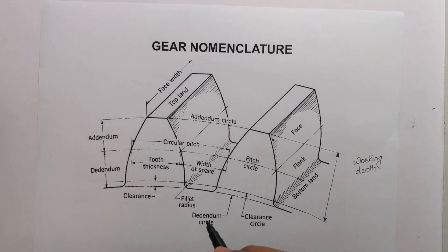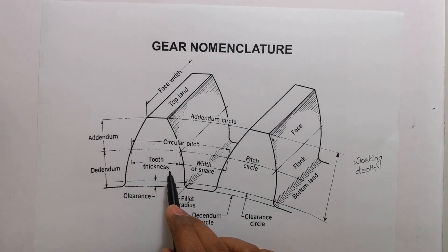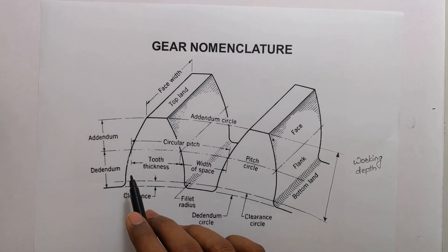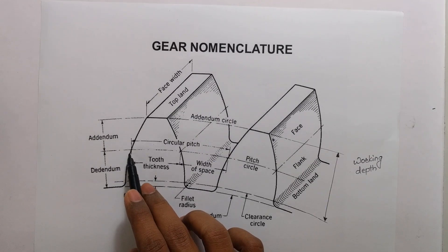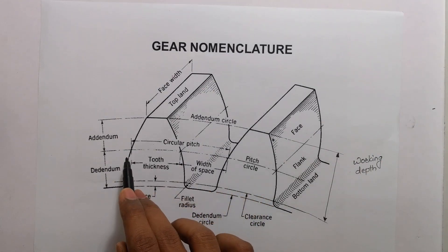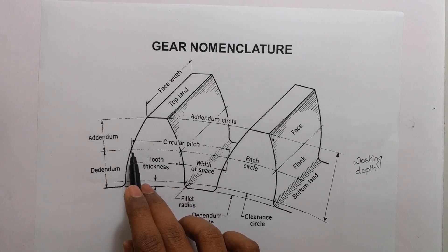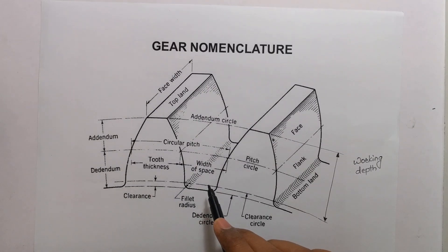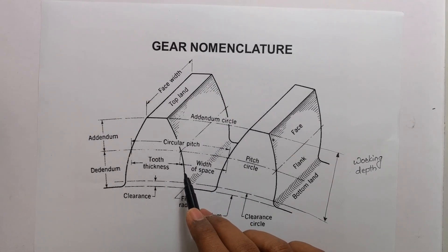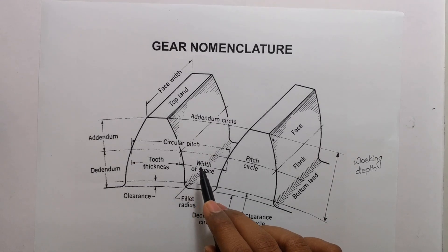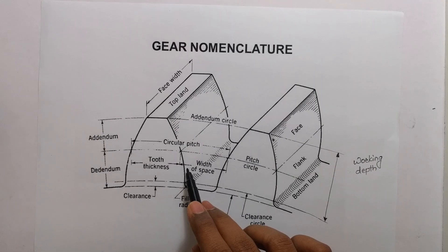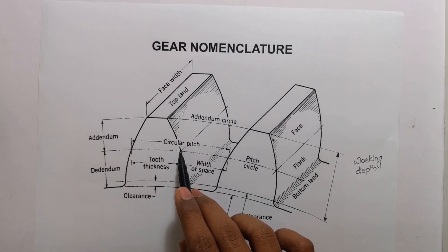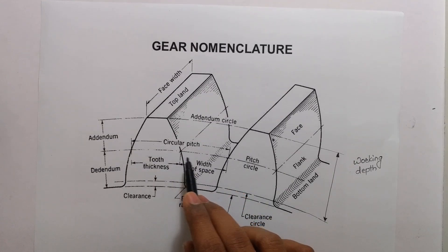Tooth thickness is the width of the tooth measured along the pitch circle. Tooth space, also called width of space, is the distance between two adjacent teeth measured along the pitch circle.